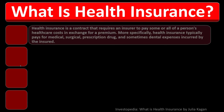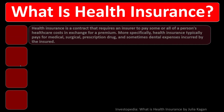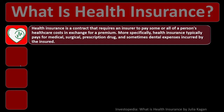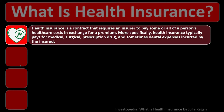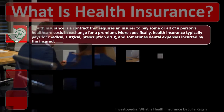What is health insurance? Health insurance is a contract that requires an insurer to pay some or all of a person's healthcare costs in exchange for a premium. It's clearly a form of insurance and a form of risk mitigation, but health insurance in many ways is more complicated than other types of insurance.